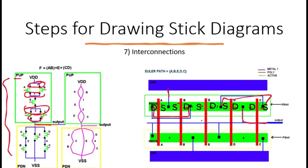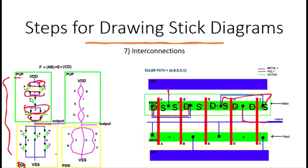Now for the pull-down network. The drain of A connects with the drains of E and D. Since A shares its source with the drain of B, A's source is here and drain of A is on the other side. The drains of E and D are alongside each other, so we put a connection between them linking to the drain of A, and these also connect to the output. This completes the upper part of the pull-down network.